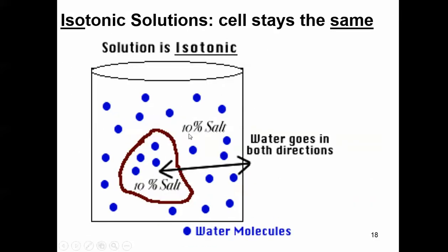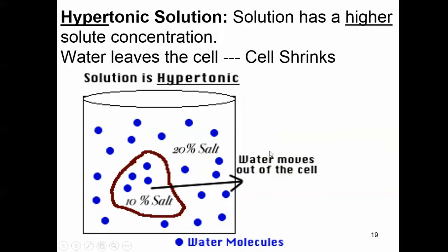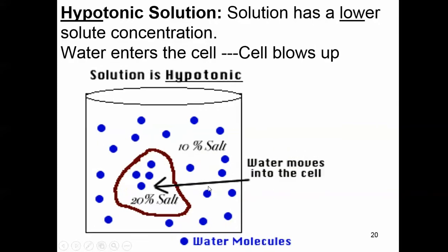Here's your isotonic situation — water's going in and out at an equal rate. A hypertonic solution — water's going to leave the cell. A hypotonic solution — there's more stuff inside the cell, so water's going in.